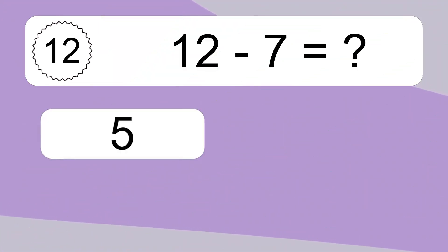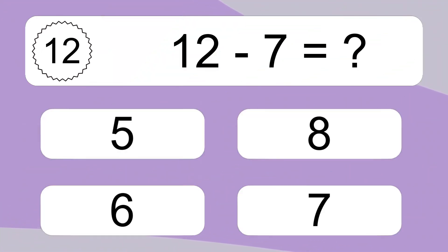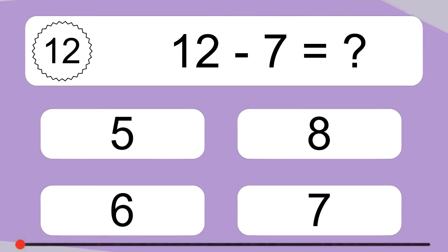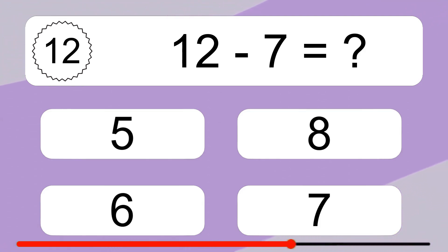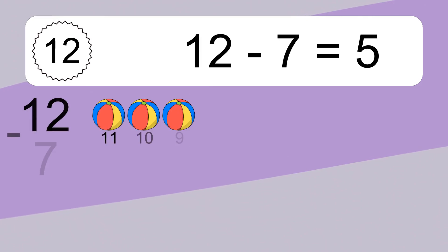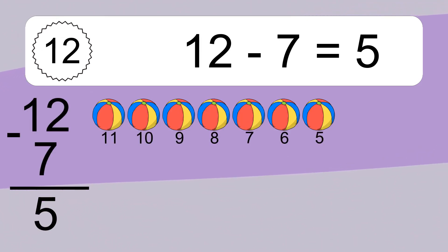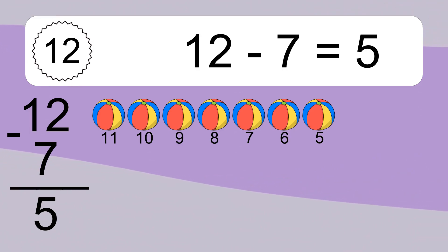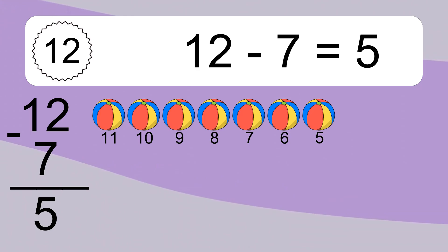12 minus 7 equals what? 12 minus 7 equals 5. Let's count it. 11, 10, 9, 8, 7, 6, 5.